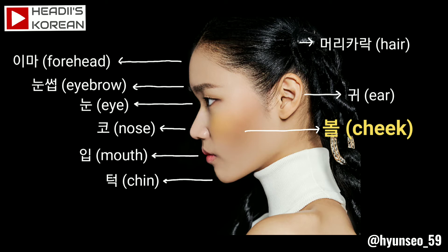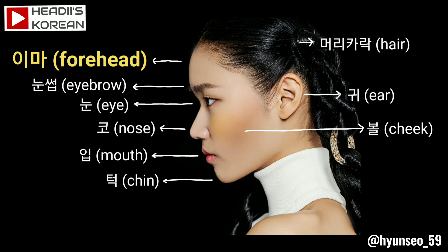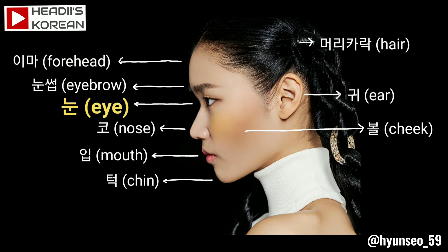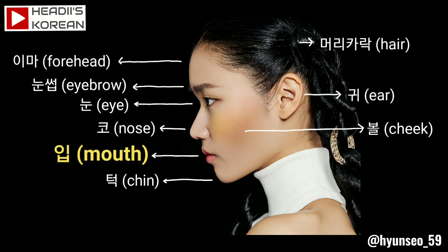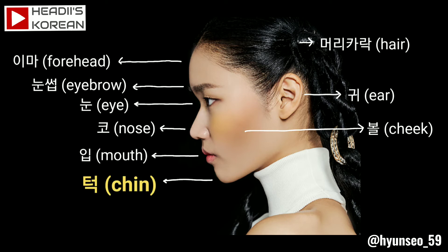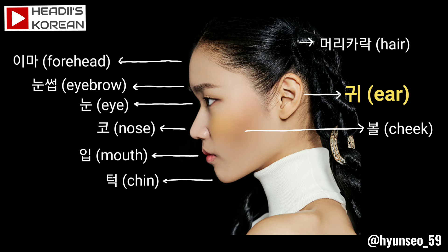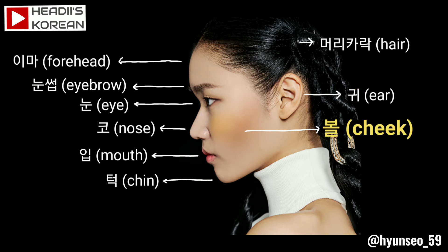Okay, now let's try this one more time. 이마, forehead. 눈썹, eyebrow. 눈, eye. 코, nose. 입, mouth. 턱, chin. 머리카락, hair. 귀, ear. 볼, cheek.